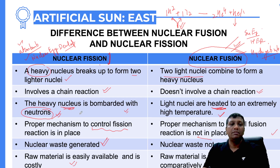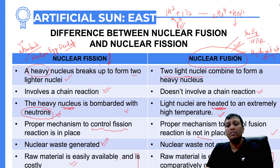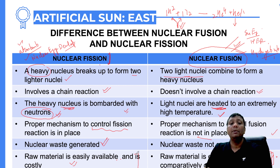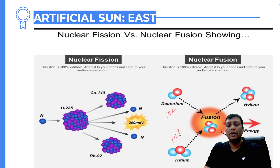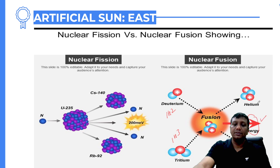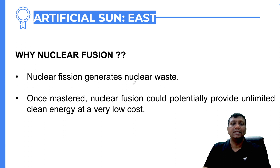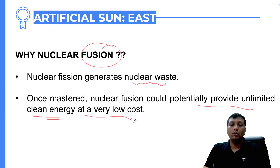Raw material for nuclear fission like uranium is easily available but costly. For nuclear fusion, hydrogen isotopes (deuterium and tritium — 1H2 and 1H3) are the fuel — easily available and comparatively cheaper than uranium. In the fusion reaction: deuterium + tritium → helium + neutron + heat and energy. Nuclear fusion generates nuclear waste, but nuclear fusion does not generate nuclear waste. Nuclear fusion could potentially provide unlimited clean energy at very low cost, solving worldwide power crisis and environmental pollution.